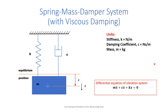Let me first introduce the spring-mass-damper system with viscous damping. We have already discussed a mass attached to a spring having stiffness k and damping coefficient c. The units of stiffness are Newton per meter, damping coefficient is Newton-second per meter, and mass is in kg. The differential equation of vibration is MẌ + CẊ + KX = 0.